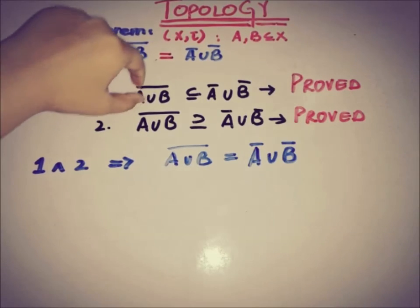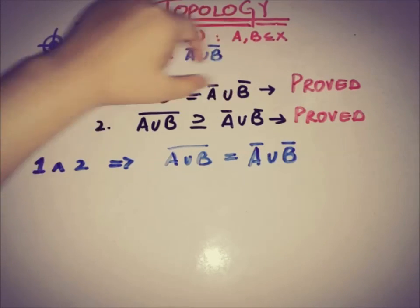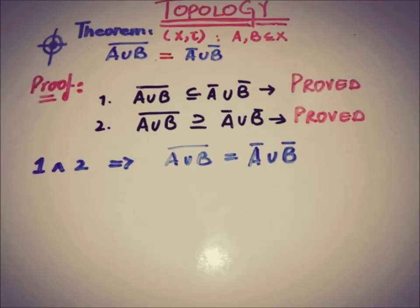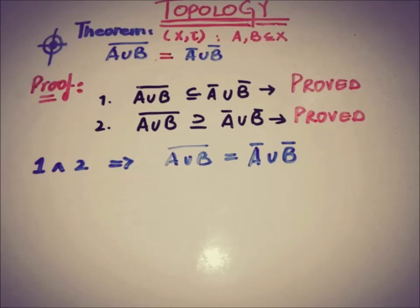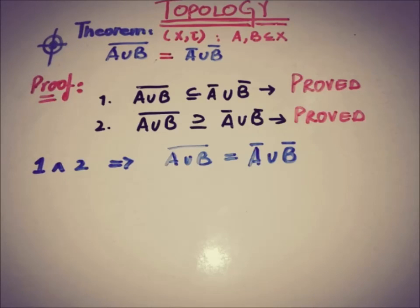By combining the first and the second part we have proved that the closure of A union B equals A closure union B closure. That's all for now. If you are looking for more such videos, you can subscribe to this channel to watch more upcoming videos. We will meet you in the next video. Till then, take care. Goodbye.